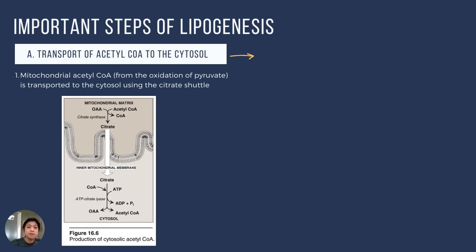The following slides will cover the important steps of the synthesis of fatty acids. The first is the transport of acetyl-coenzyme A to the cytosol. Remember that acetyl-coenzyme A can come from many different sources — for example, pyruvate, which is the product of glycolysis, would have to undergo an intermediate step through the action of pyruvate dehydrogenase to form acetyl-coenzyme A.